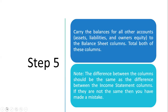In step five, we carry the balances for all other accounts — that is, assets, liabilities, and owners' equity — to the balance sheet columns. We total both columns, but the balance sheet columns also won't balance initially.